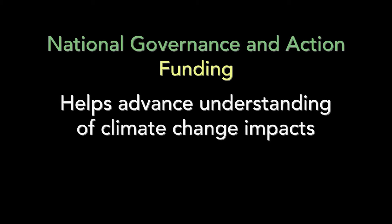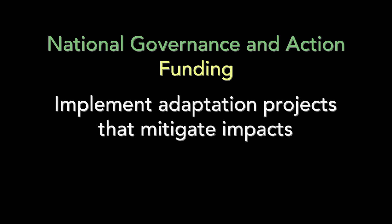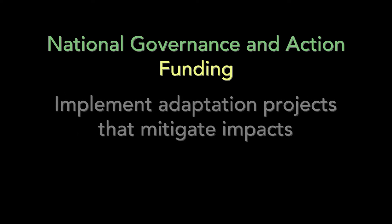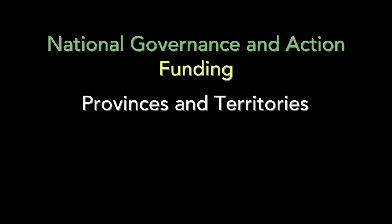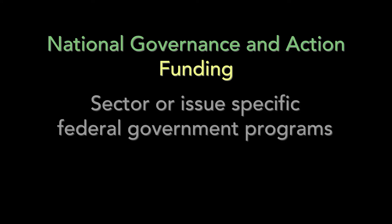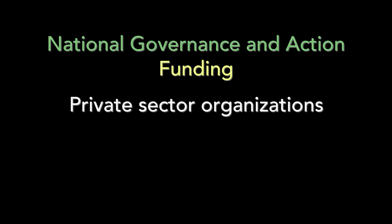Nationally, the federal, provincial, and territorial governments have worked with each other and with other partners to advance adaptation issues that affect their respective and shared jurisdictions. Funding for adaptation research and project work has helped to advance Canadians' understanding of climate change impacts, implement adaptation projects that seek to mitigate these impacts, or build resilience to future climate change impacts. Adaptation financing comes from provincial and territorial governments, sector or issue-specific federal government programs, and also from private sector organizations with an interest in reducing climate risk.